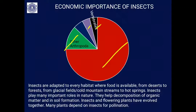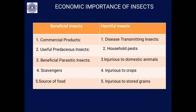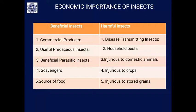I have classified insects into beneficial and harmful categories. Beneficial insects provide commercial products, are predacious on pests, are beneficial parasites, are good scavengers, and are also a source of food. Harmful insects are categorized as disease-transmitting, household pests, injurious to domestic animals, injurious to crops, and injurious to stored grains. This list is very long — I am limiting myself to syllabus requirements.